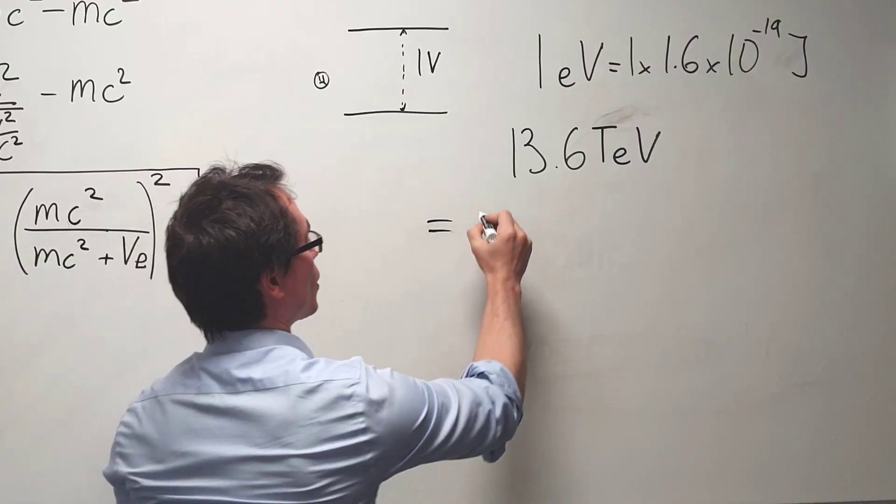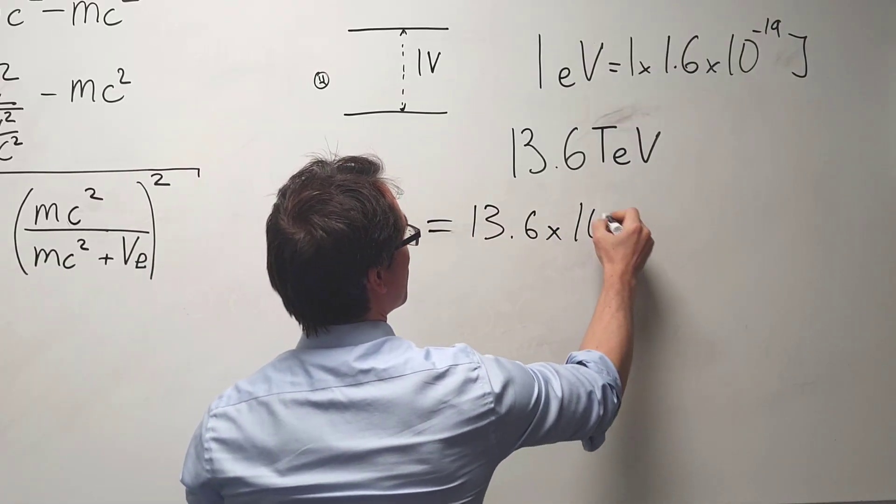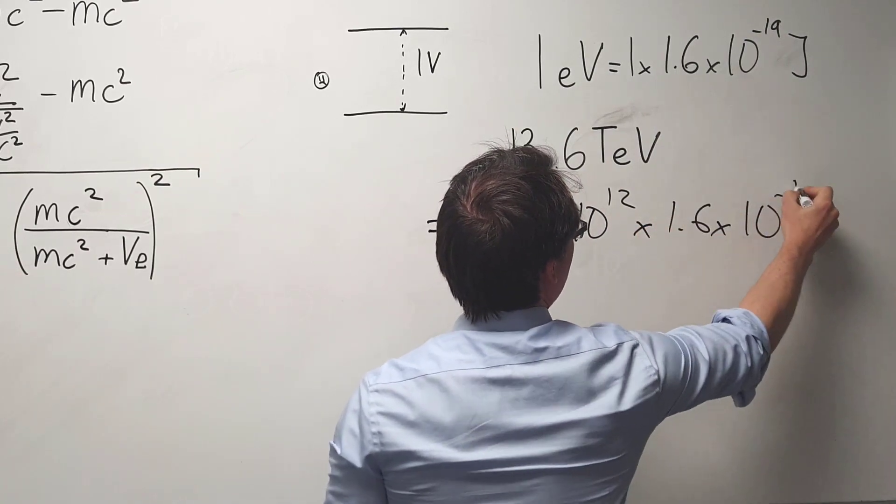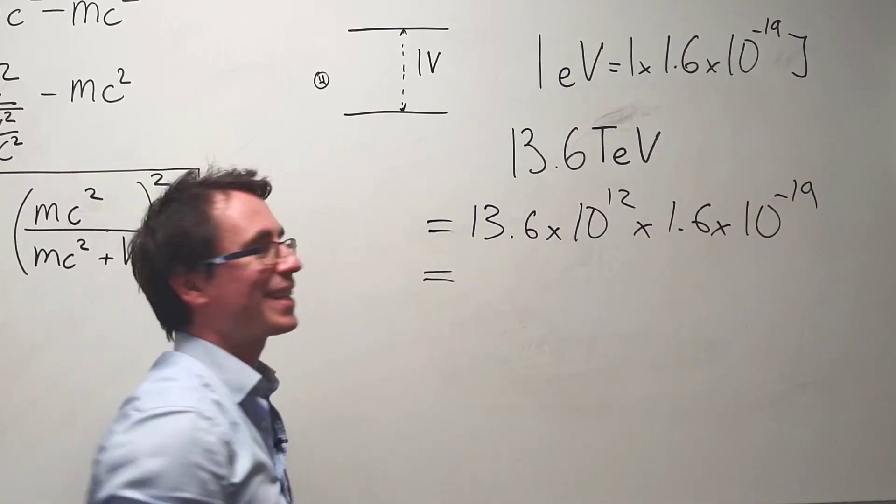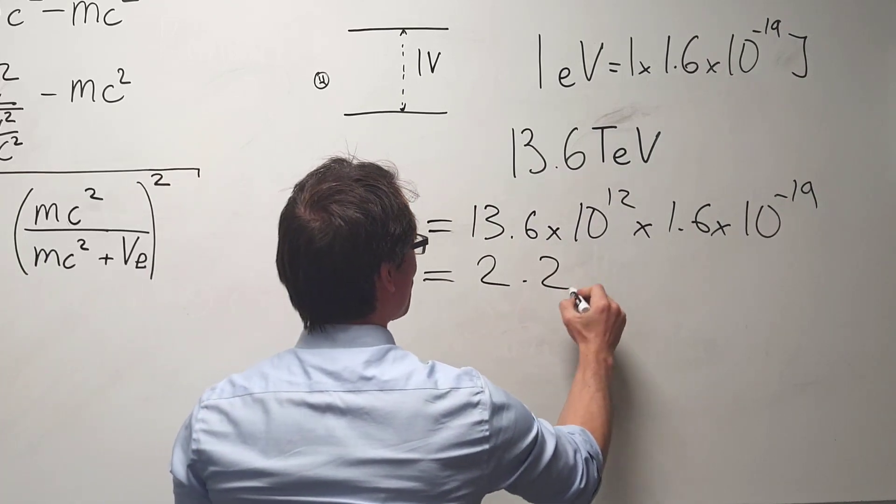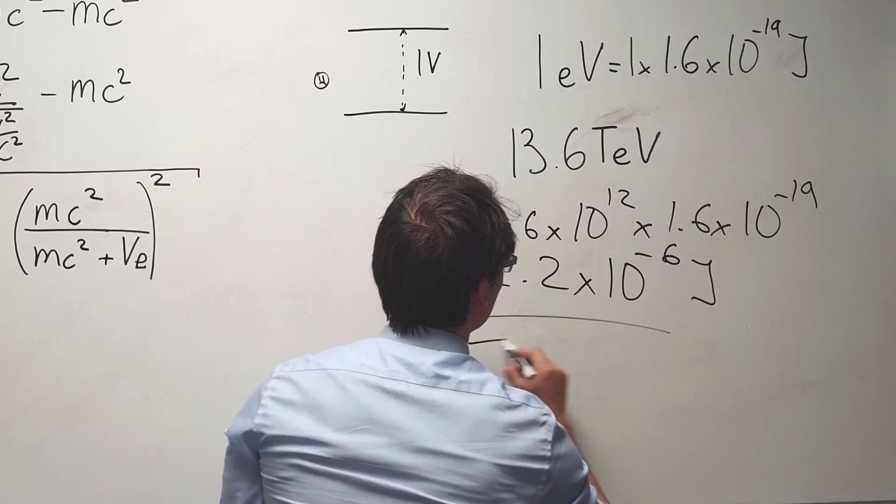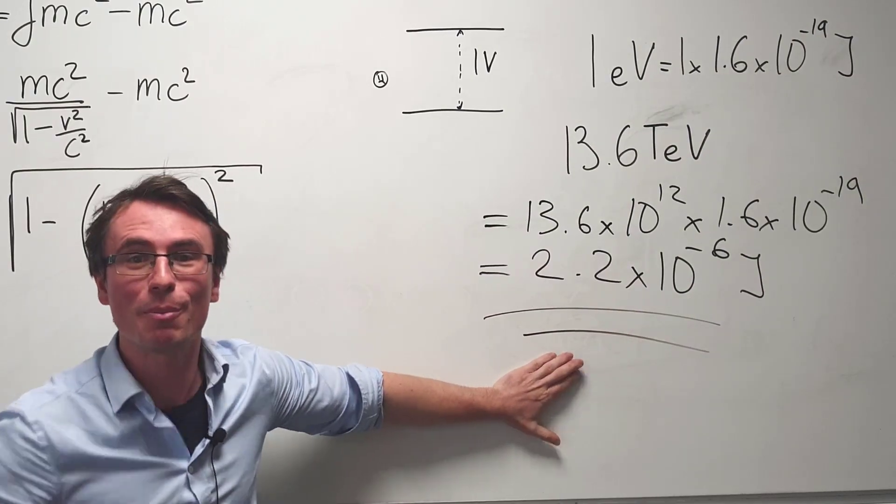This will be equal to just 13.6 times tera, which is 10 to the power of 12, times the elementary charge 1.6 times 10 to the power of minus 19, which is about equal to 2.2 times 10 to the power of minus 6 joules. This is not a large number.